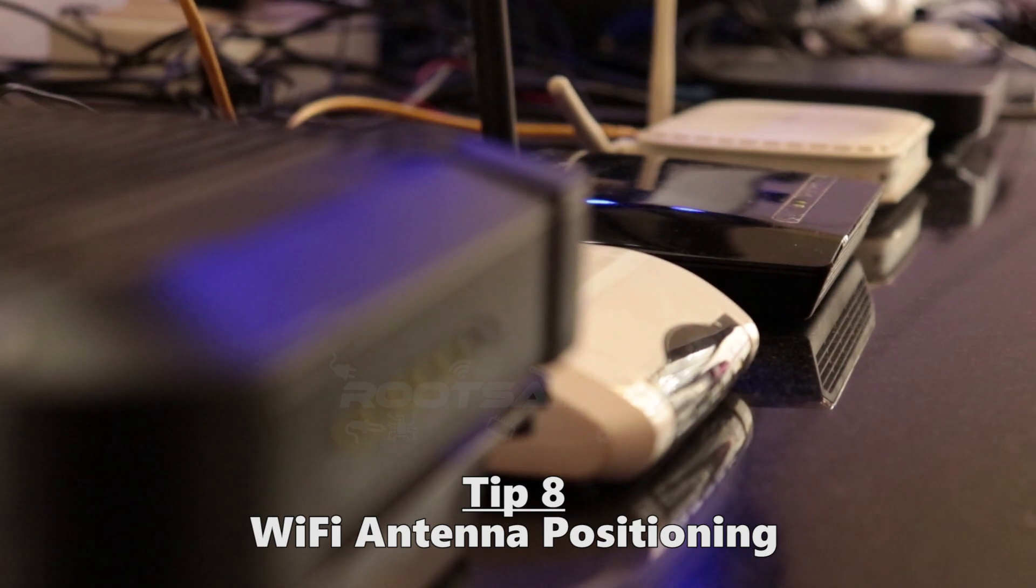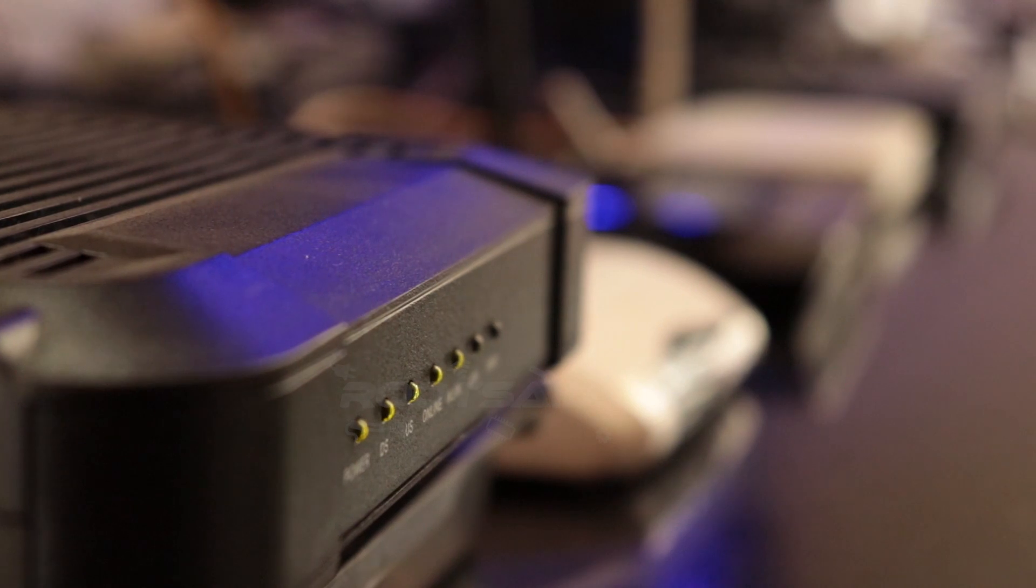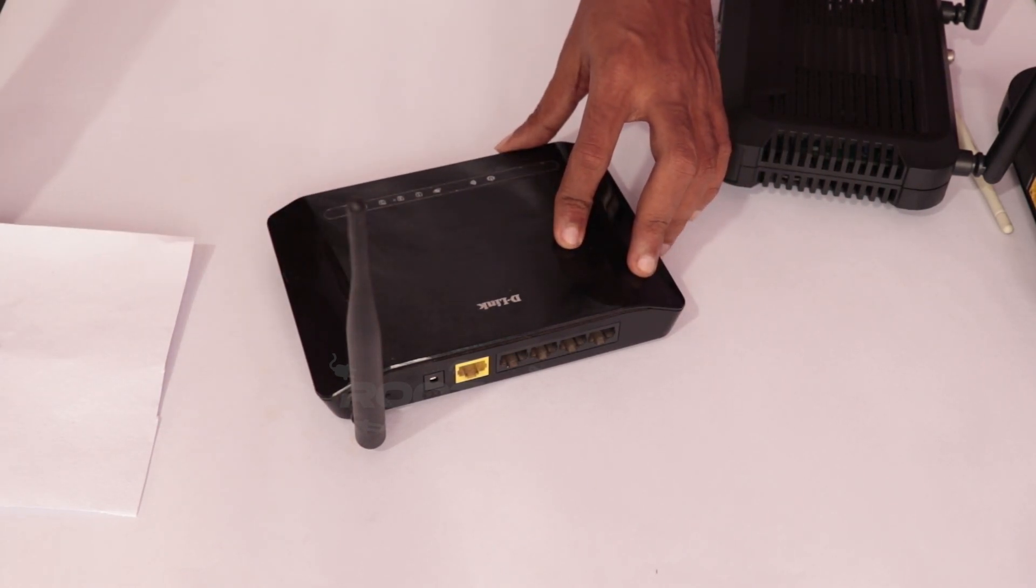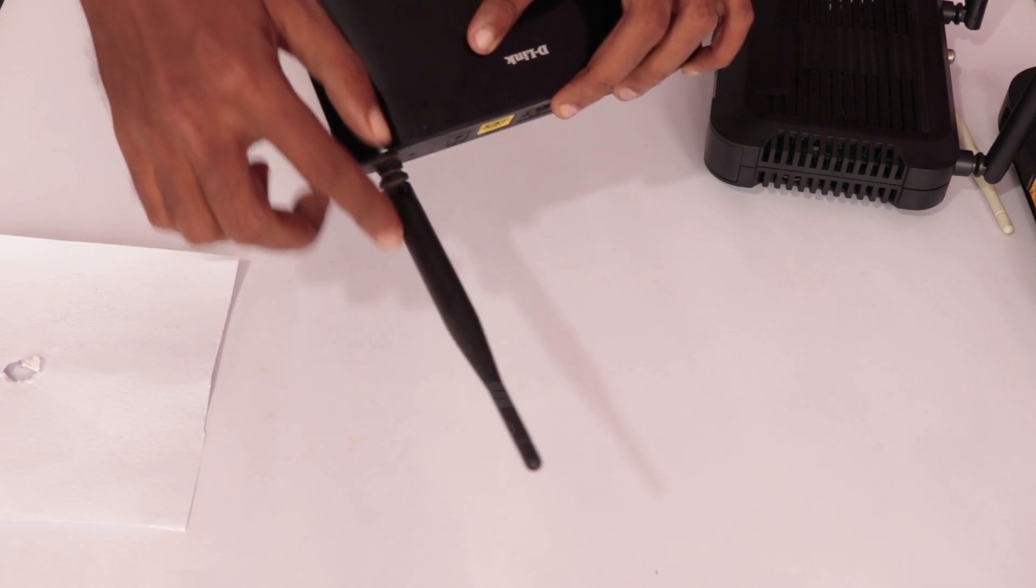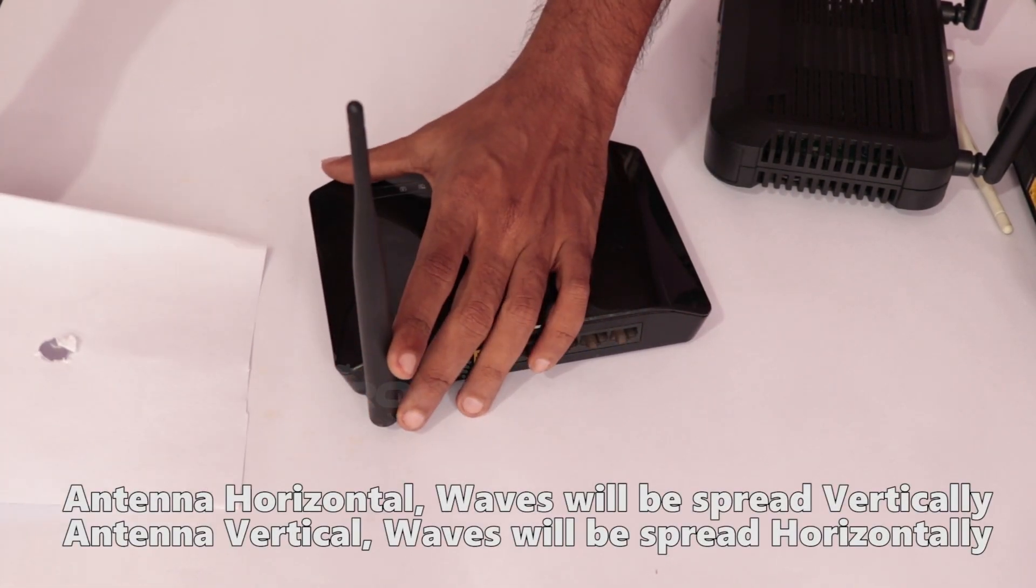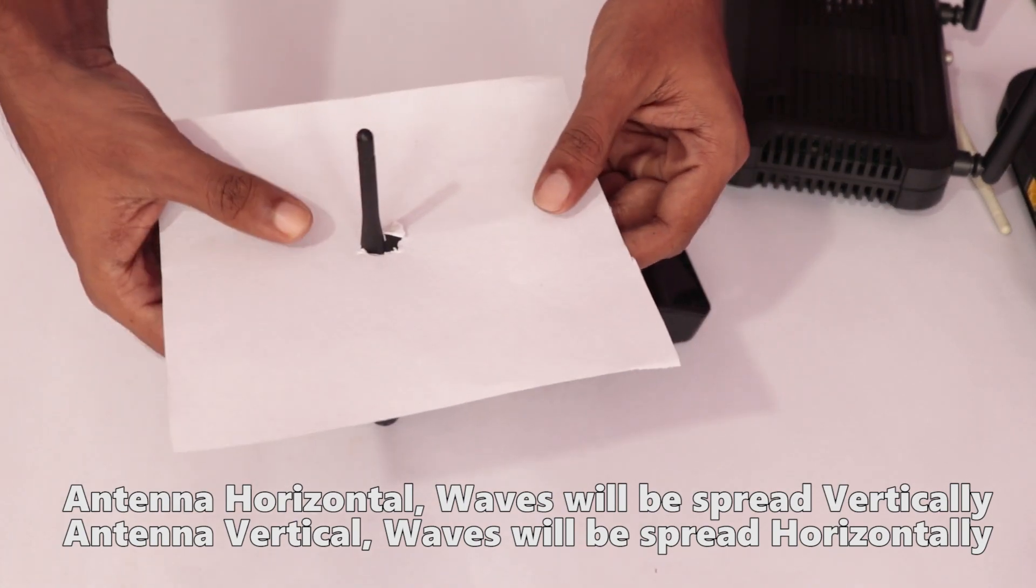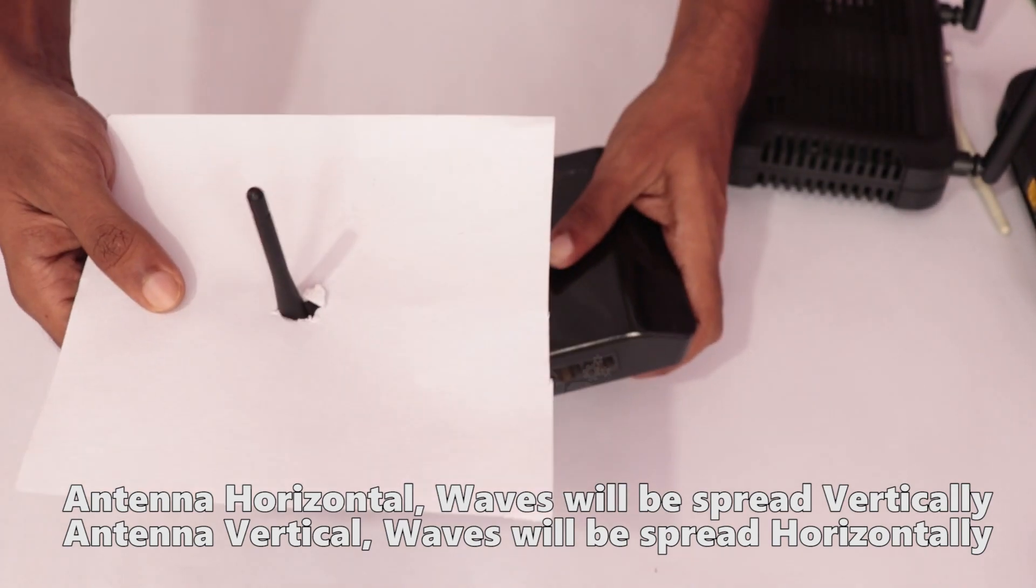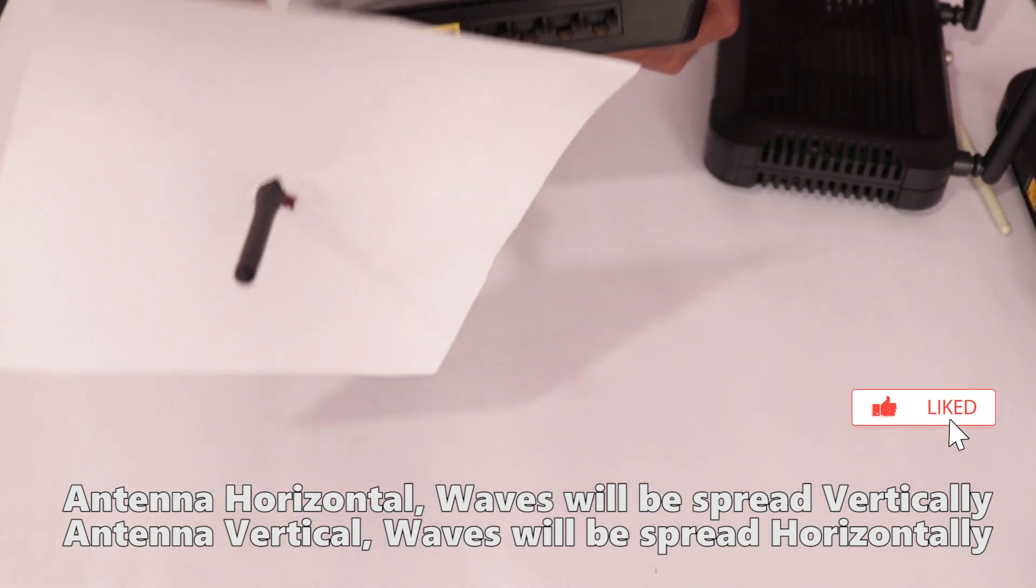Wifi router antenna position plays a crucial role in the speed and range of the wifi signal. Most of the home router antennas have omnidirectional antennas that emit wifi signals equally in a single plane. The direction of radiation emitted will be perpendicular to the direction you point the antenna. That means, if your wifi router antenna position is vertical, it will emit radiation in a horizontal plane. If you are pointing wifi antenna horizontally, waves will be emitted vertically.